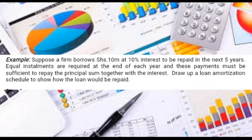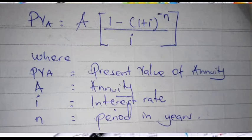We are asked to draw up a loan amortization schedule to show how the loan would be repaid. Equal installments are required at the end of each year for five years, which is an annuity, but the equal installment amount has not been given. So we are going to first calculate that equal installment using the formula for the present value of annuity.